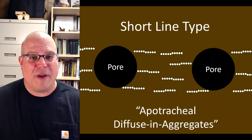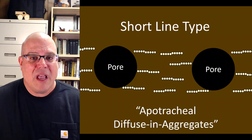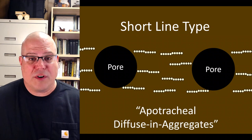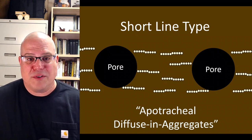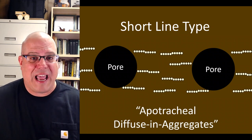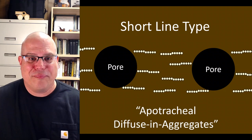Now let's look at parenchyma that forms line patterns. Some woods exhibit short horizontal lines throughout the growth ring. Some of the lines touch pores, but many do not, and those that touch a pore can't really be accused of hugging it. We call this short line pattern apotracheal diffuse in aggregates.